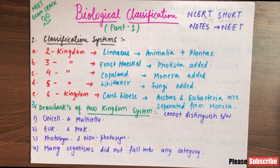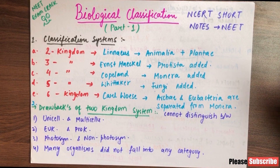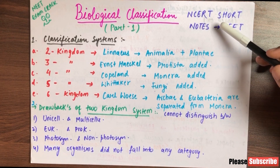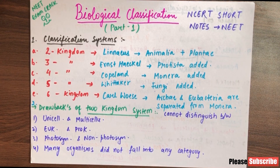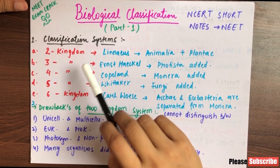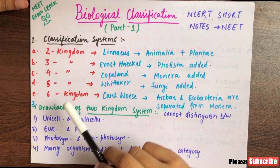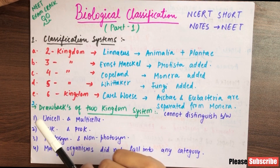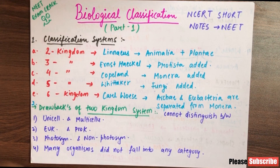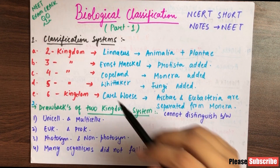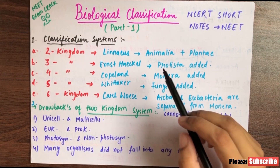There are many examples and types in this chapter, so these short notes will help you cover it. This is video number 1 because the chapter is big. First of all, let's start with classification systems. We have 2-kingdom, 3-kingdom, 4-kingdom, 5-kingdom, and 6-kingdom classifications. You have heard up to 5-kingdom; 6-kingdom is also added in class 11th.